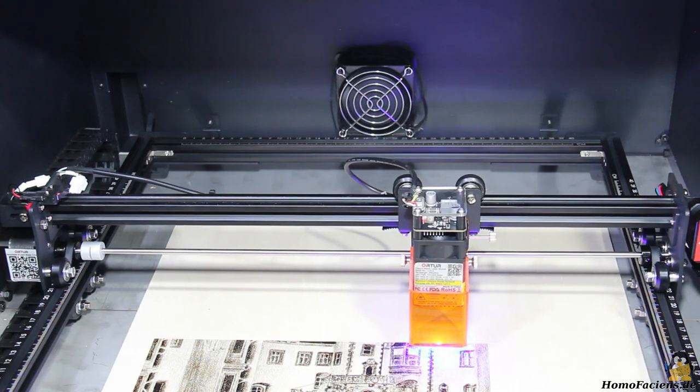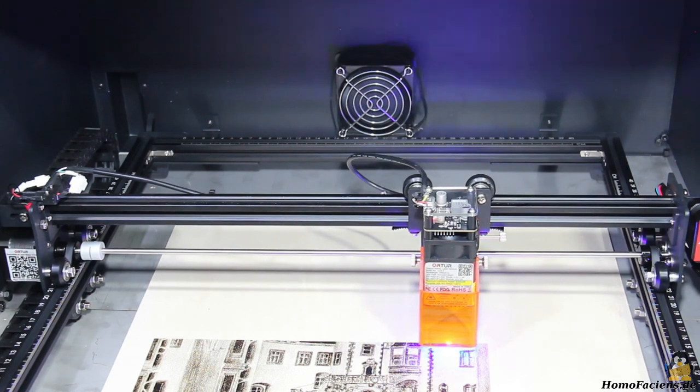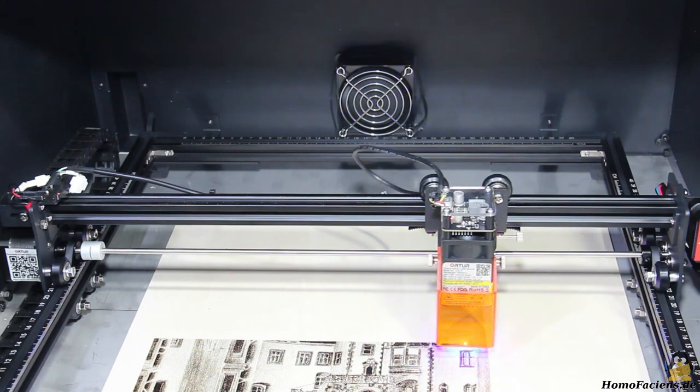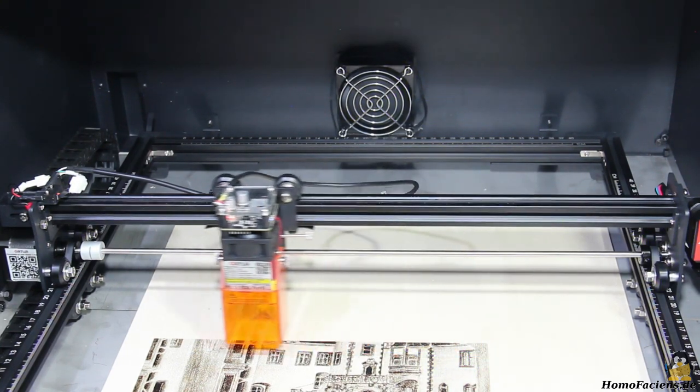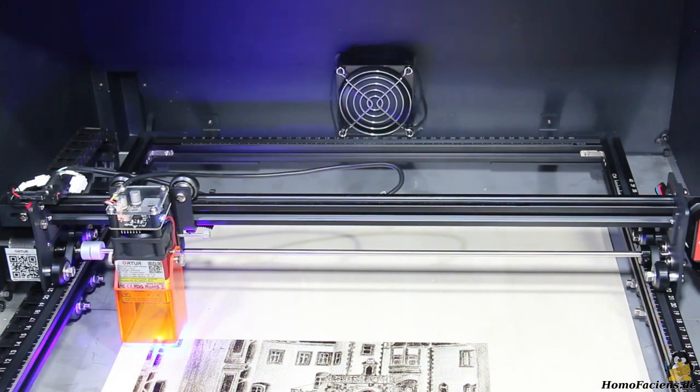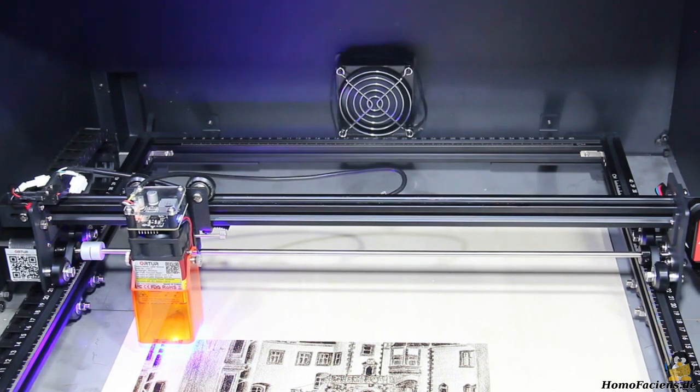The machine engraves work pieces by evaporating or carbonizing the material, both of which cause harmful vapors to be produced. The vapors are directed via a fan on the back of the box and a flexible tube on the outside.